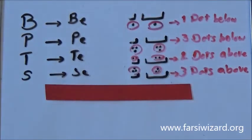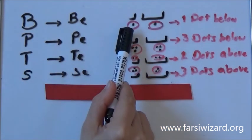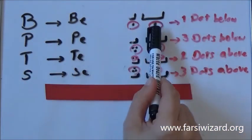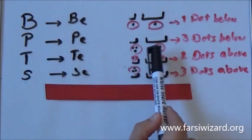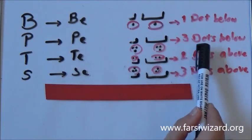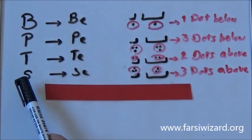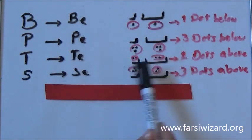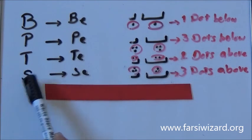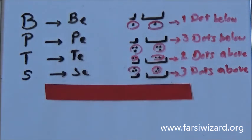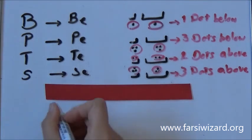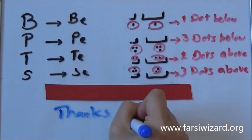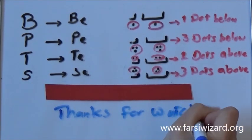I think it would be easy for you to remember now how to write each of these letters. Let's review: B is B with one dot below. P is P with three dots below, like the pie. T — one of the versions — is T with two dots above, like the letter T itself. And one of the versions of S is C with three dots above. This video was a little long, but I really wanted to make sure you memorize everything during the video. I hope you enjoyed it — I enjoyed showing you how to write these four letters. Hopefully I will make more videos teaching you how to write and pronounce letters in Farsi.